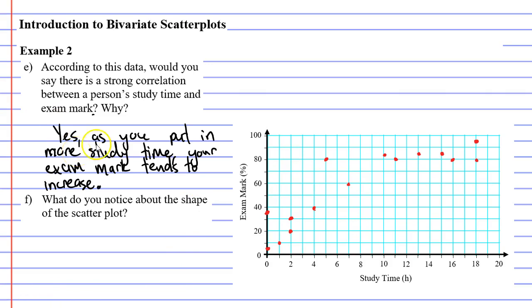Now moving on to question F: what do you notice about the shape of the scatter plot? I would say that this has a shape that is curved and not linear. We can see the trend going quite steep, and then as you get into your higher marks, it starts to flatten off. So for my shape, I'm going to say a curve and also that it's non-linear.